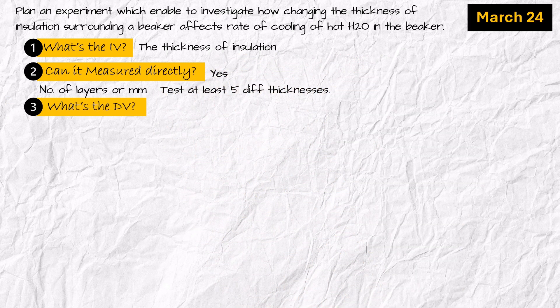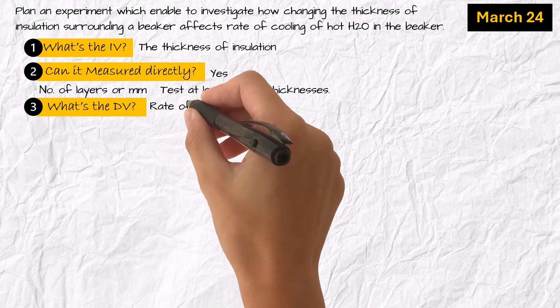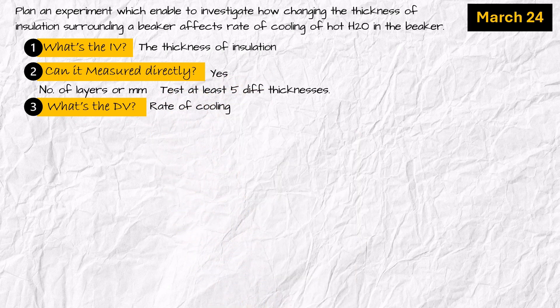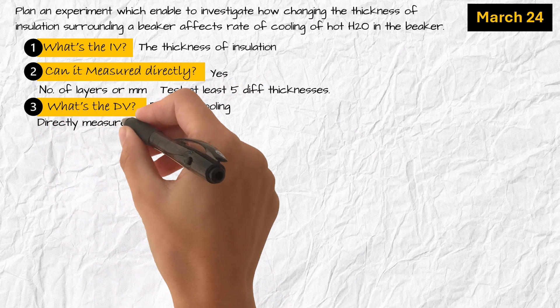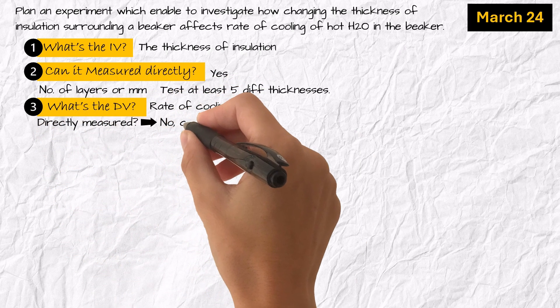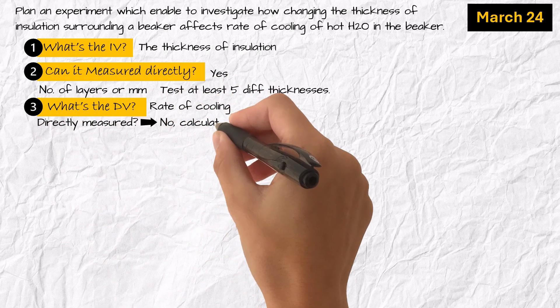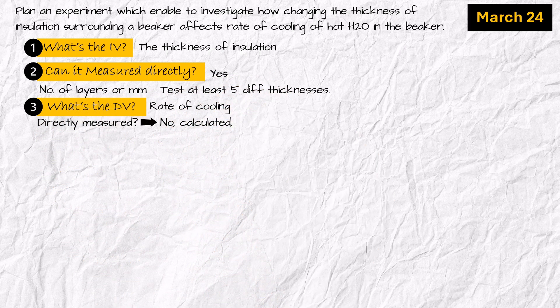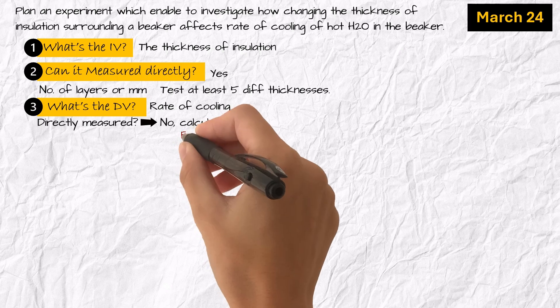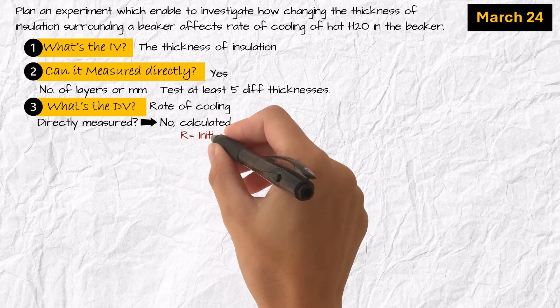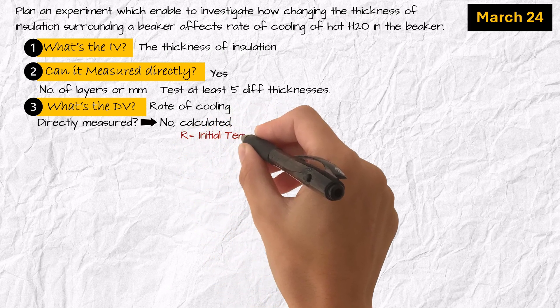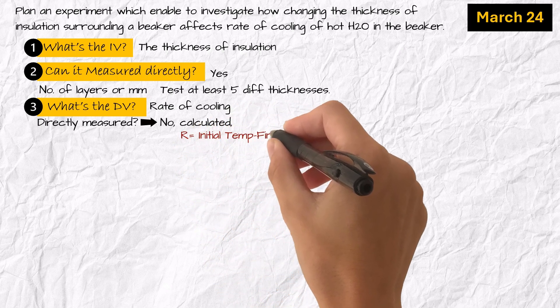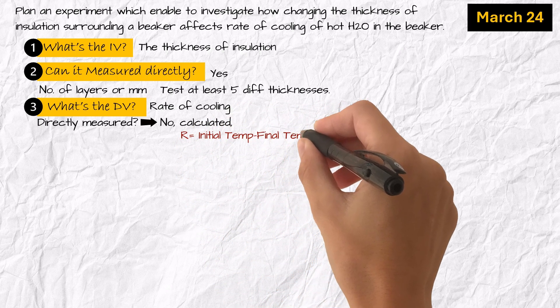Number three: what's the dependent variable? The rate of cooling. Is it directly measured? No — it is the temperature drop over time, calculated using the formula: rate equals initial temperature minus final temperature, divided by time.